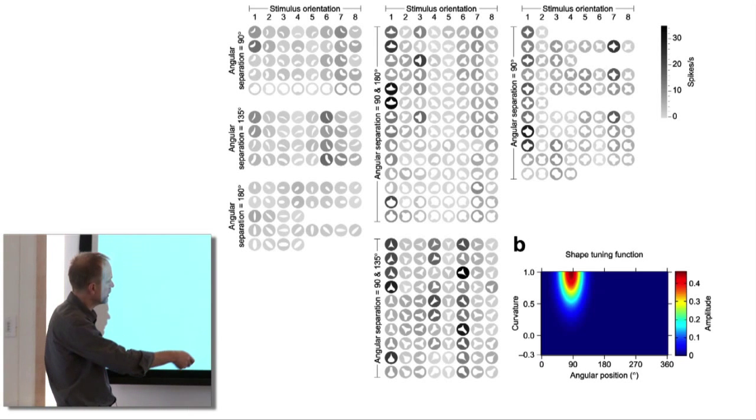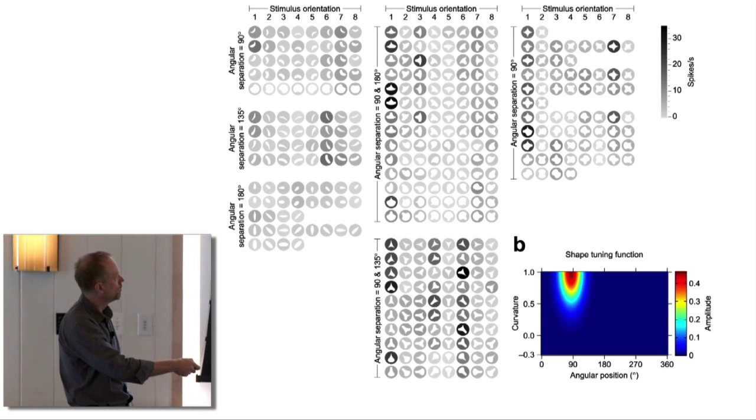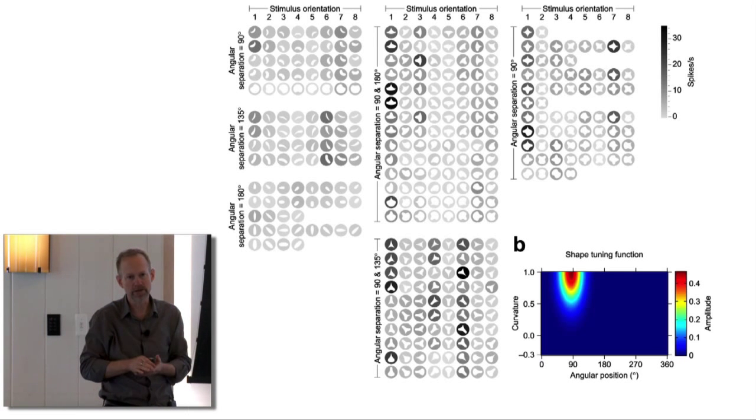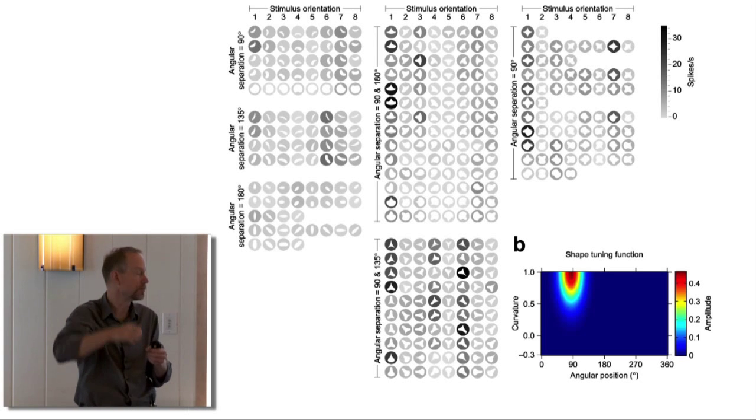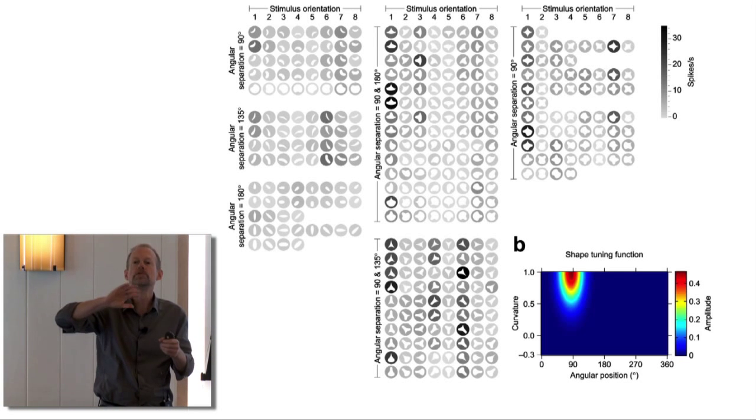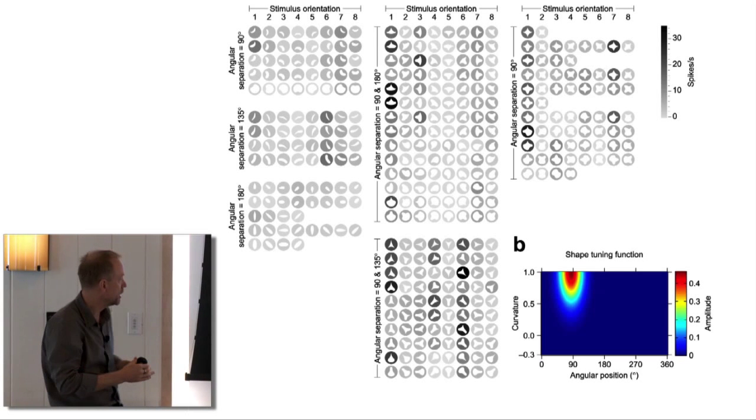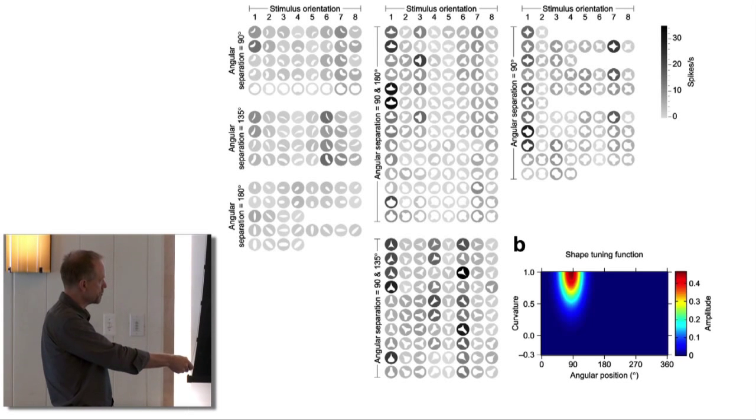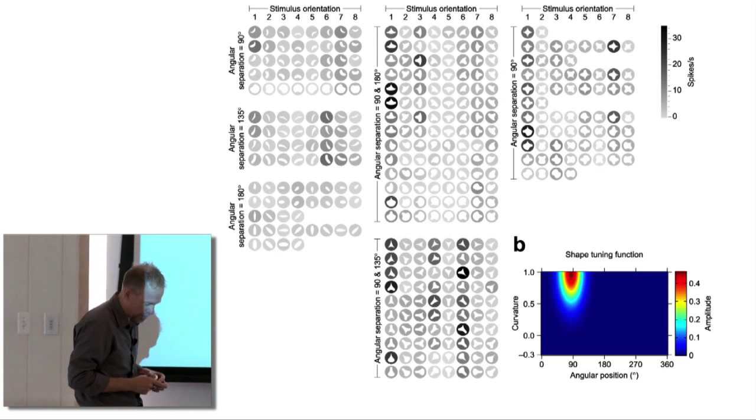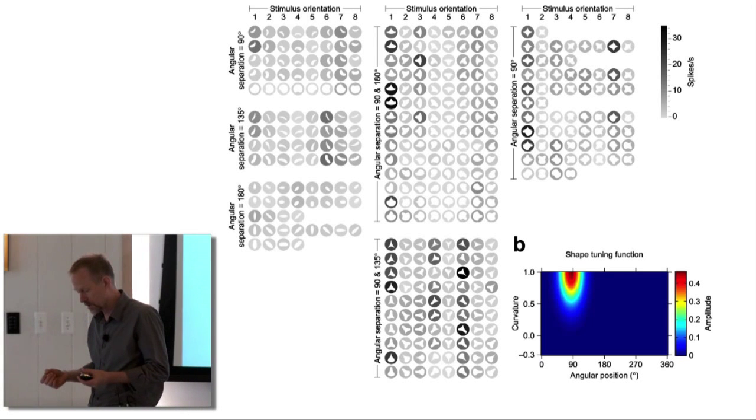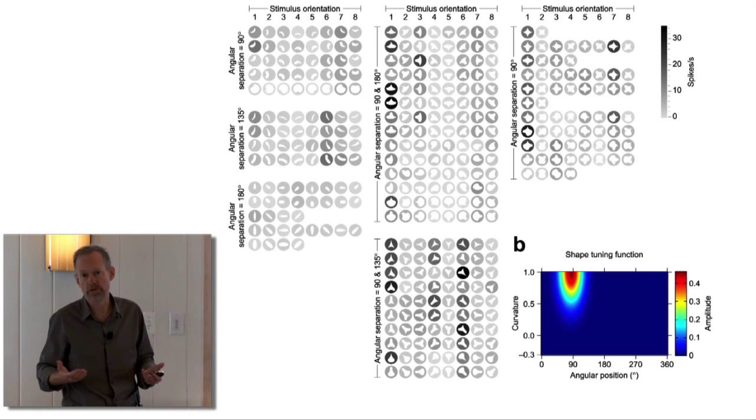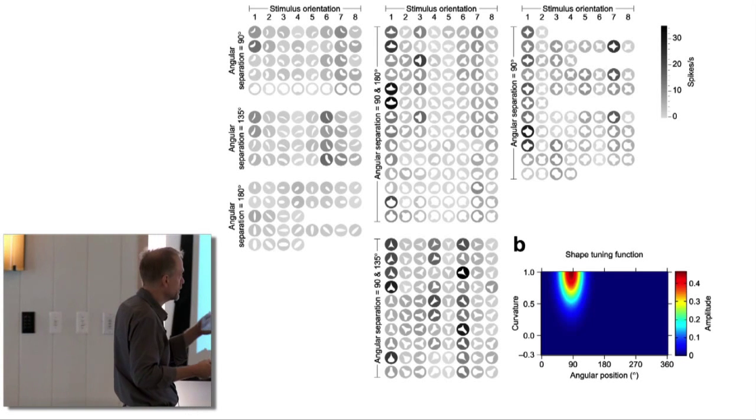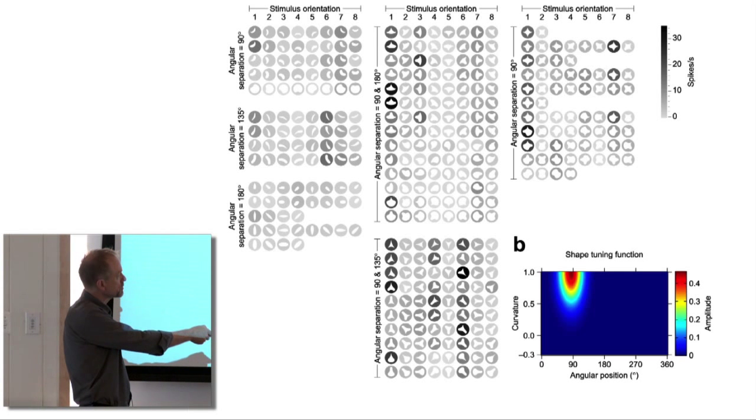Then our vertical dimension is curvature. Zero means something that's flat. 1.0 means extremely sharp convex curvature. Curvature actually is rate of change in orientation with respect to contour length. Orientation is a derivative; curvature is a second-order derivative on top of orientation. It's how fast orientation is changing. So 1 corresponds to very sharp convex, 0.5 is broader convex, 0 is flat, negative numbers are concave.